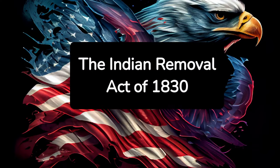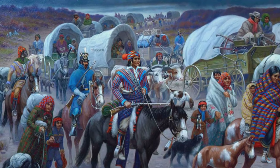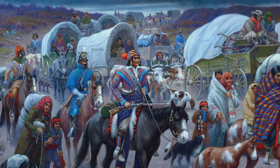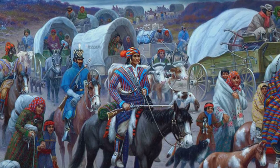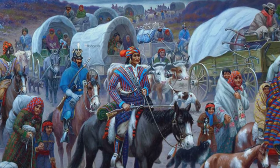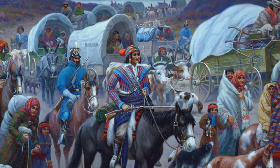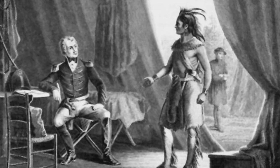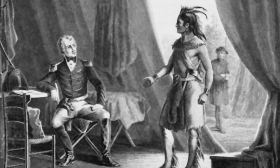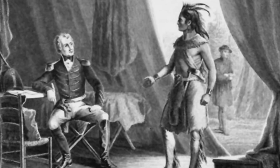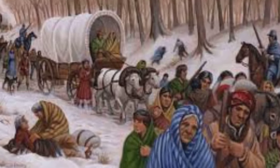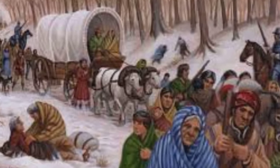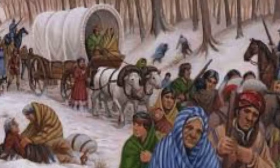2. The Indian Removal Act of 1830. This law authorized the forced relocation of thousands of Native Americans from their ancestral lands, leading to the infamous Trail of Tears. It caused immense suffering, death, and the loss of native cultures and histories. The Indian Removal Act represents a devastating chapter in America's history of dealing with indigenous peoples.